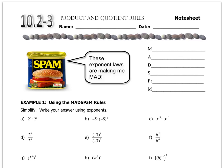Here's what mad spam means. When you're multiplying bases, you add the exponents. When you're dividing, you subtract the exponents. And when you have parentheses, you multiply the exponents.